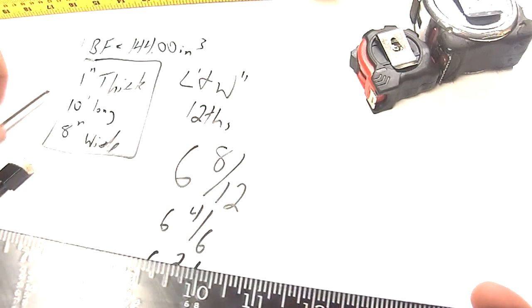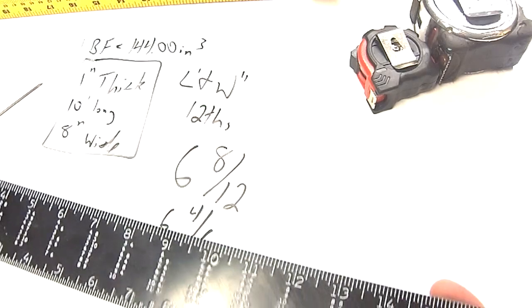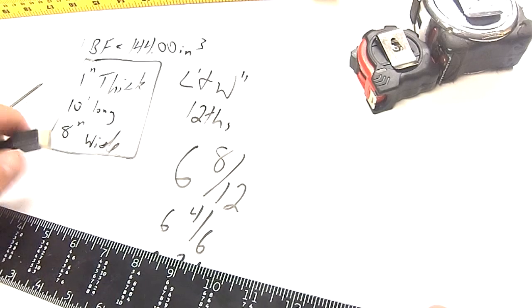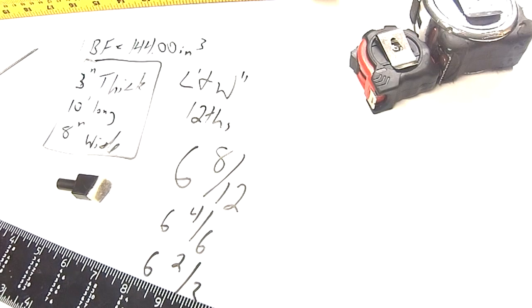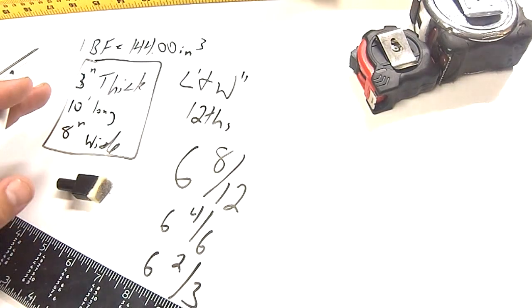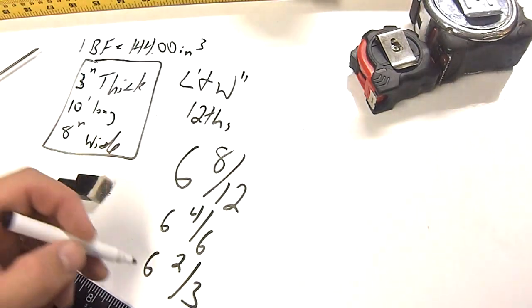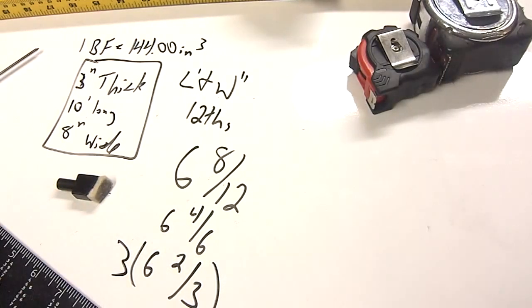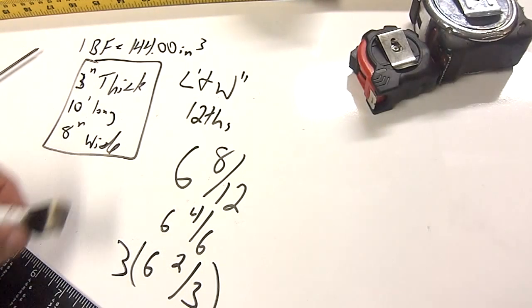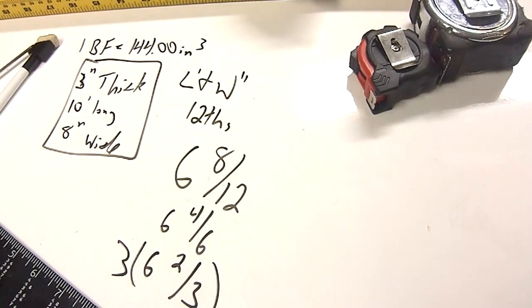Now, say, for example, that your wood is not the 1-inch thick. Let's say that it is 3 inches thick. You're going to do the same exact process, and then when you get to this point, you're simply going to multiply that by 3, and then that's going to tell you what the board foot for that piece of material actually is.